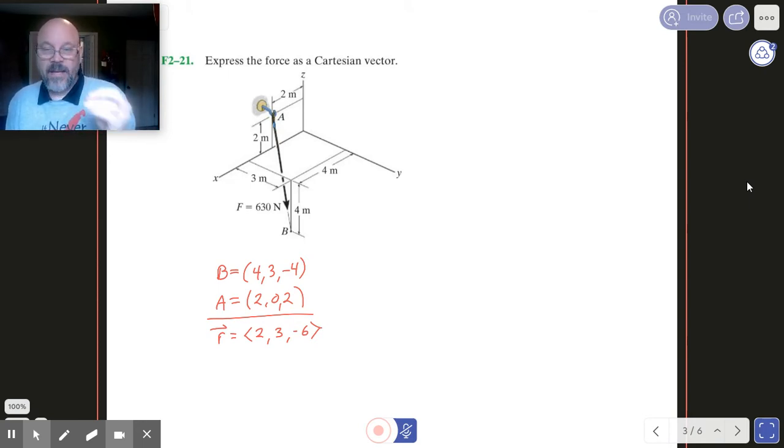Instead, imagine that we have a rope, and the rope is tied off in two places. It's tied off up above, and it's tied down below. And somehow, we know the tension in that rope. But then we need a vector to describe that tension as a force. So how do we do that?